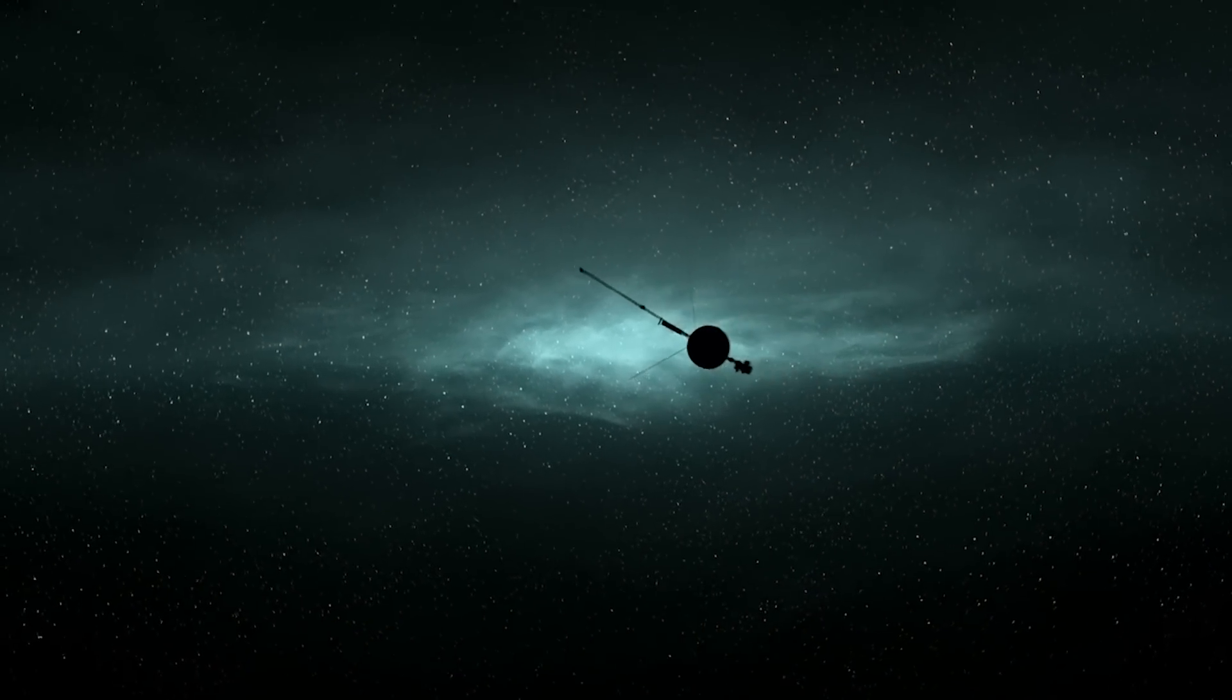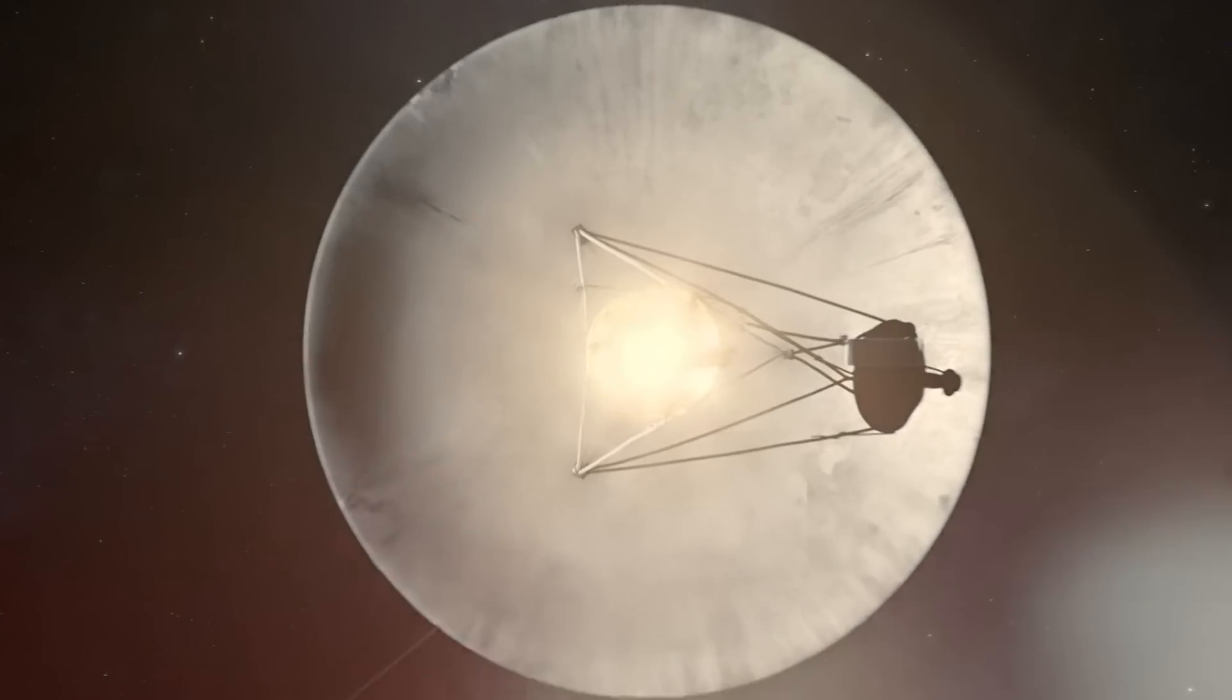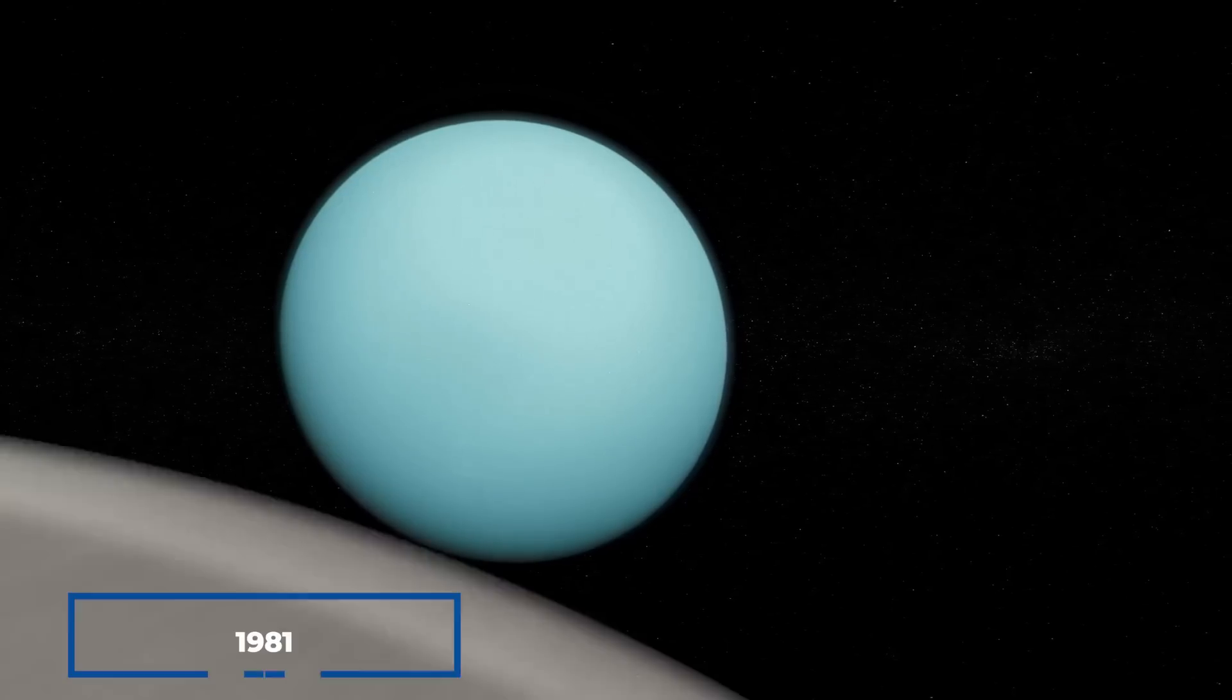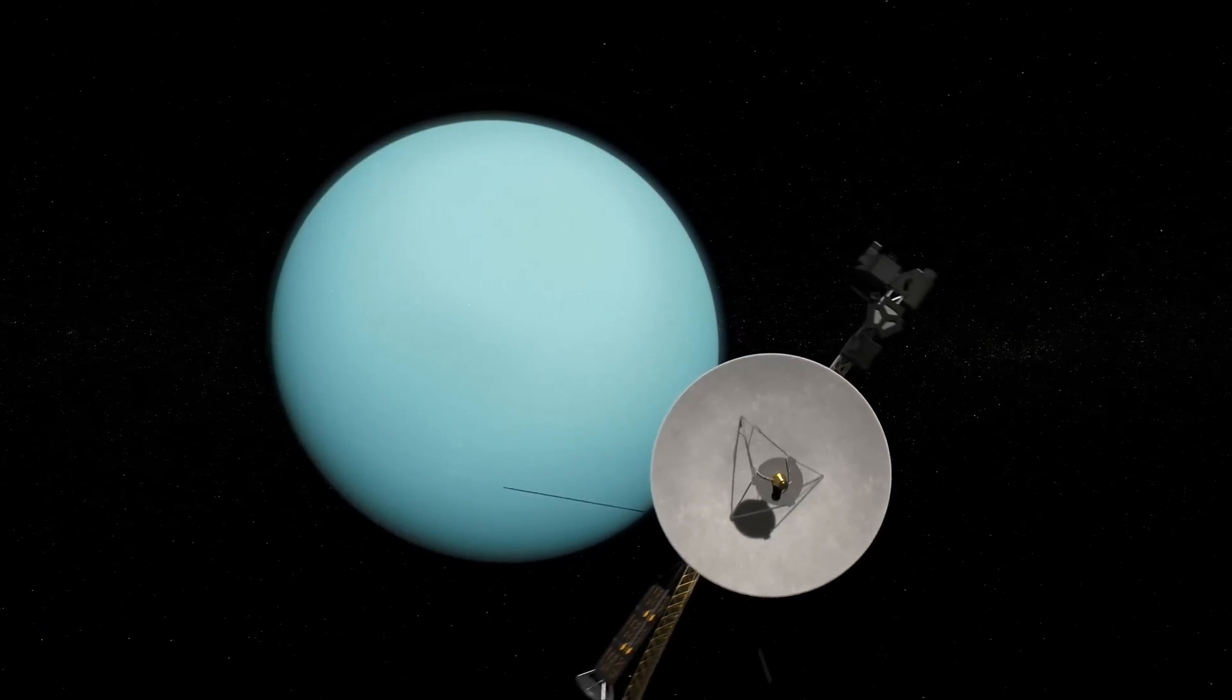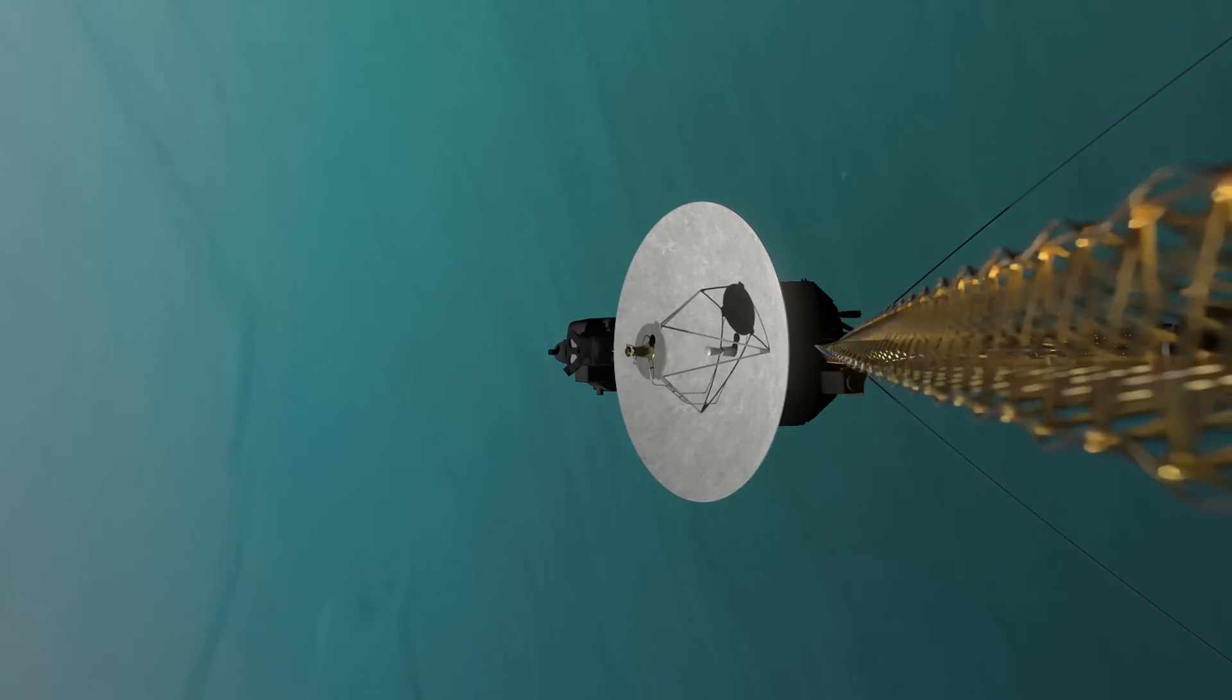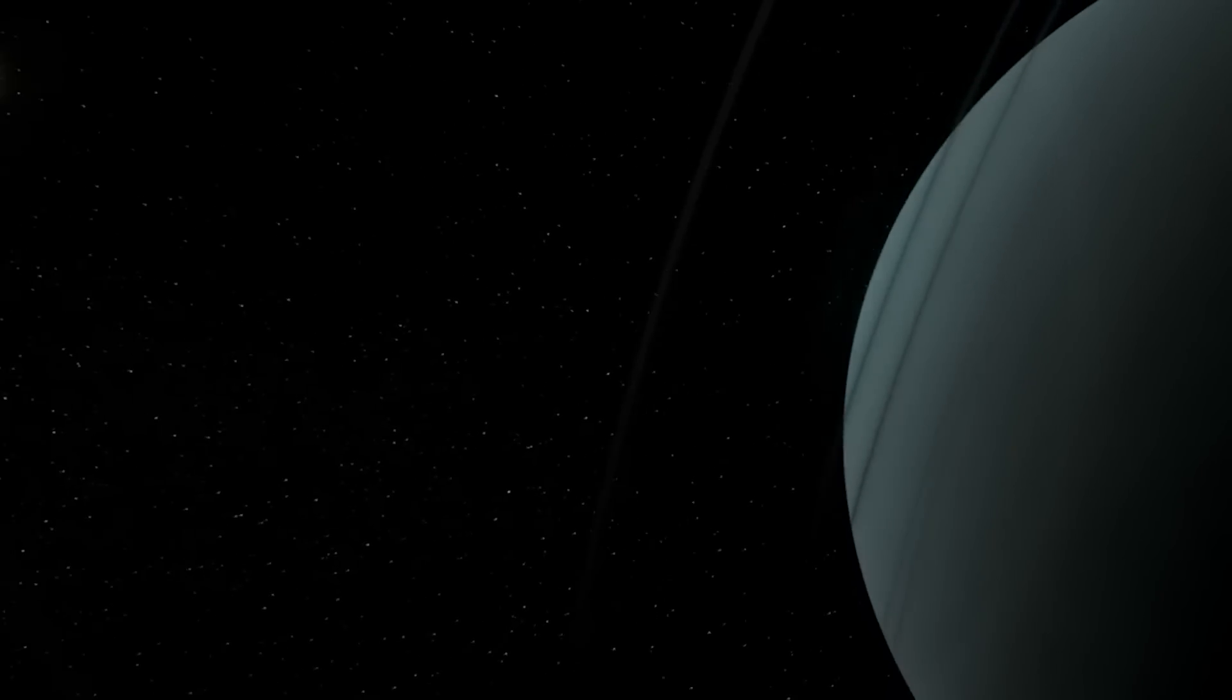While Voyager 1 bid adieu to our solar system and ventured into interstellar space, Voyager 2 still had some exciting pit stops in store. In 1981, a corrective maneuver was made to set Voyager 2 on a course towards Uranus, and after exceeding its originally predicted lifespan twice, the spacecraft finally arrived at the remote ice giant in January 1986. But that was just the beginning. On its way to Uranus, Voyager 2 discovered 10 previously unknown moons, adding to the growing celestial family.